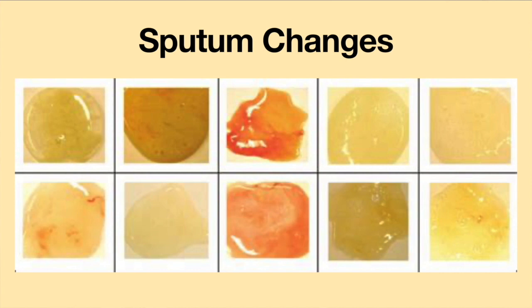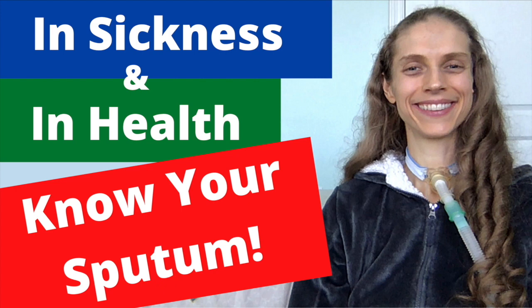Pneumonia symptoms in trached patients may be different than pneumonia symptoms in the general population. Usually, the first sign of a respiratory infection in a trached patient is sputum changes. The sputum may be thicker, turn a different color, and may have an odor. Also, the person may have an increase in the amount of sputum produced. For more information about sputum, please see the video 'In Sickness and in Health: Know Your Sputum.'